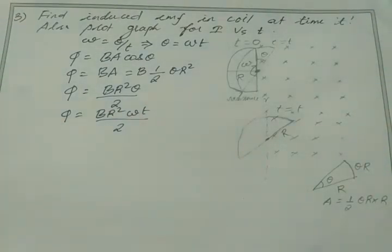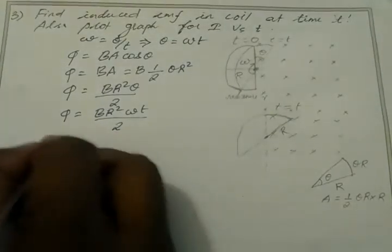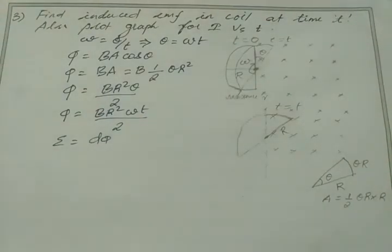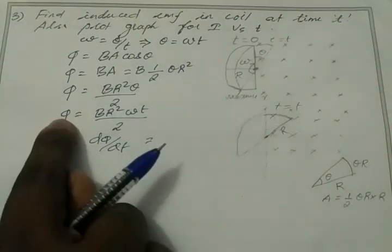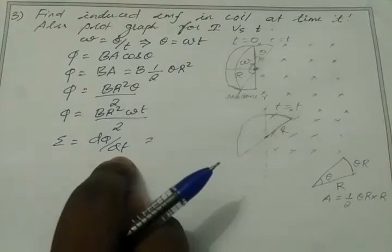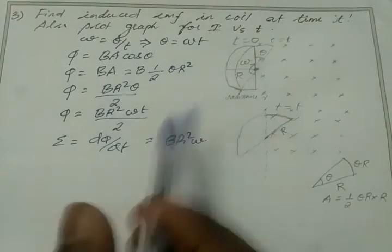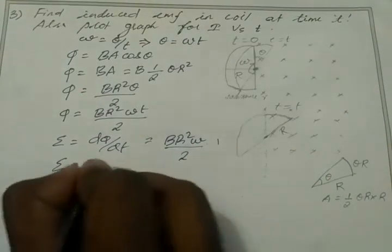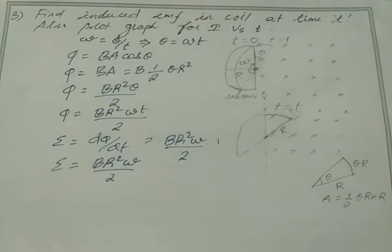For instantaneous EMF, we use d(phi)/dt (not del phi for average). Differentiating phi = B·r²·omega·t / 2 with respect to t: EMF = d(phi)/dt = B·r²·omega / 2. This is the constant instantaneous EMF value. Current i = EMF/R = B·r²·omega / (2R).